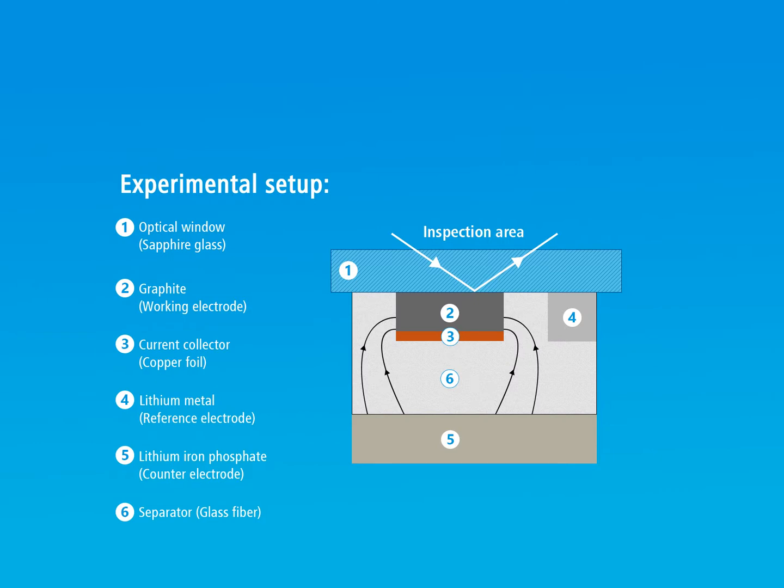Here we present an experiment carried out with the ECC-Opto-Standard test cell showing the color change of a graphite electrode during electrochemical lithiation. The test cell was assembled inside a glovebox according to mode number 3 of the manual.